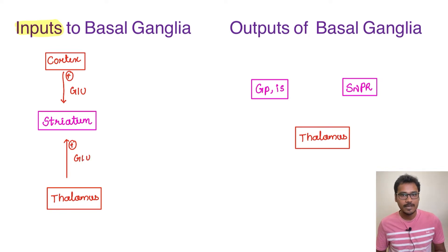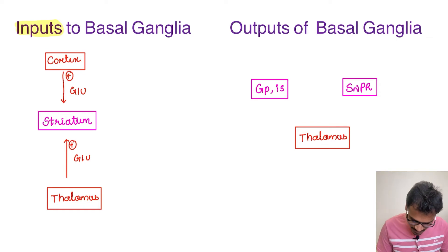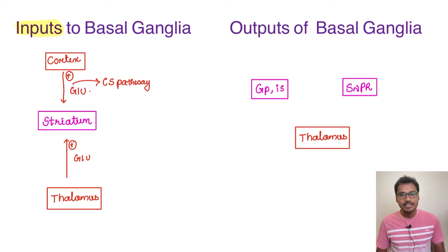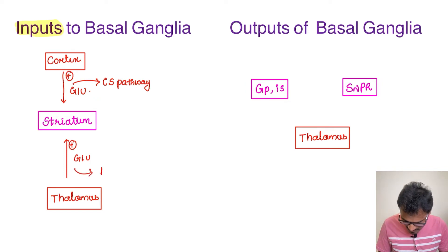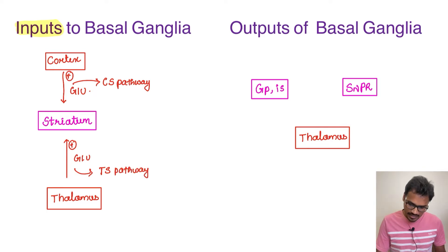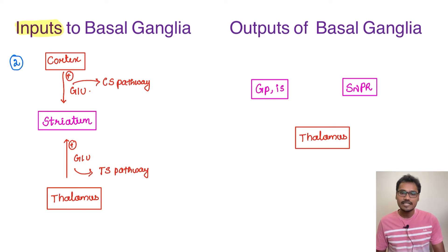There are specific names for these input pathways. From the cortex to the striatum, the pathway is called the corticostriatal pathway. From the thalamus to the striatum, it is the thalamostriate pathway. So there are only two inputs to the basal ganglia — corticostriatal and thalamostriate. Similarly, there are only two outputs from the basal ganglia: one from the globus pallidus internal segment and one from the substantia nigra pars reticularis. Both release GABA.